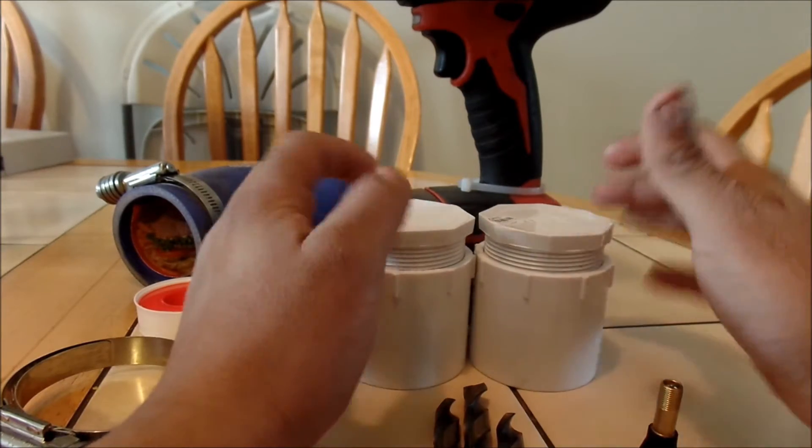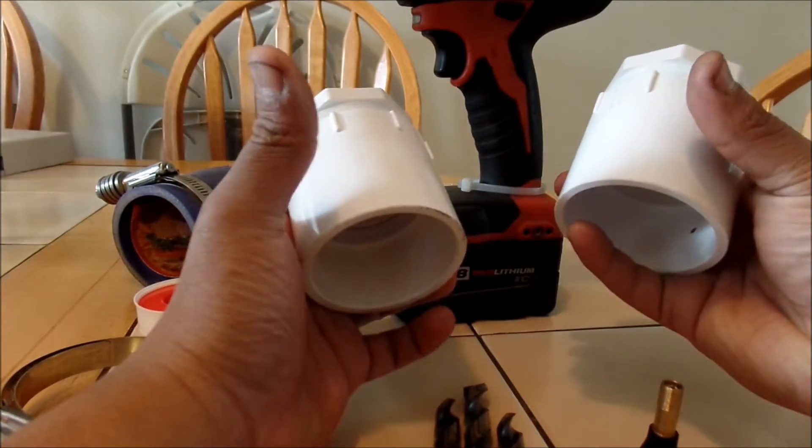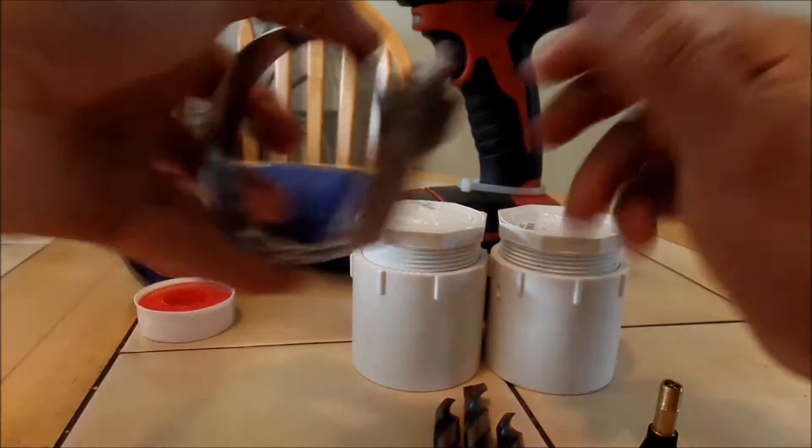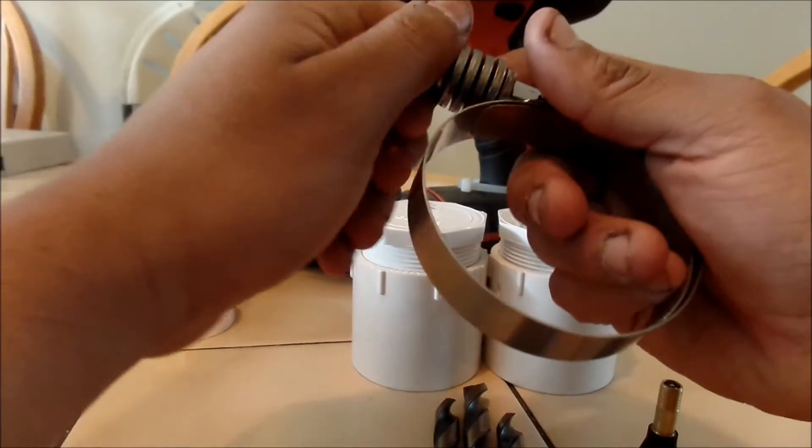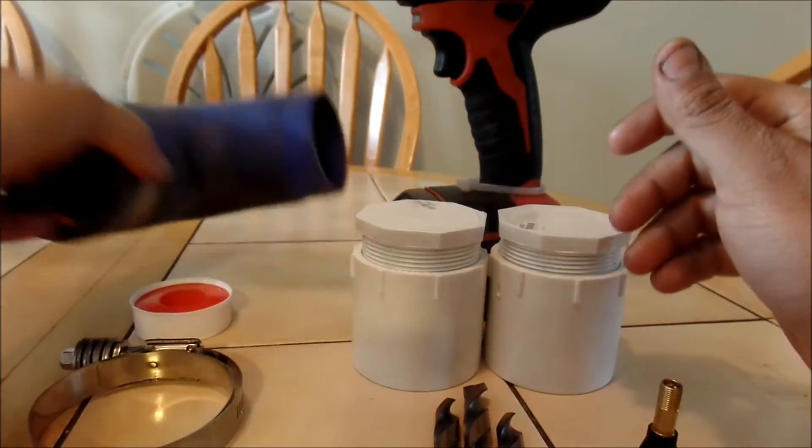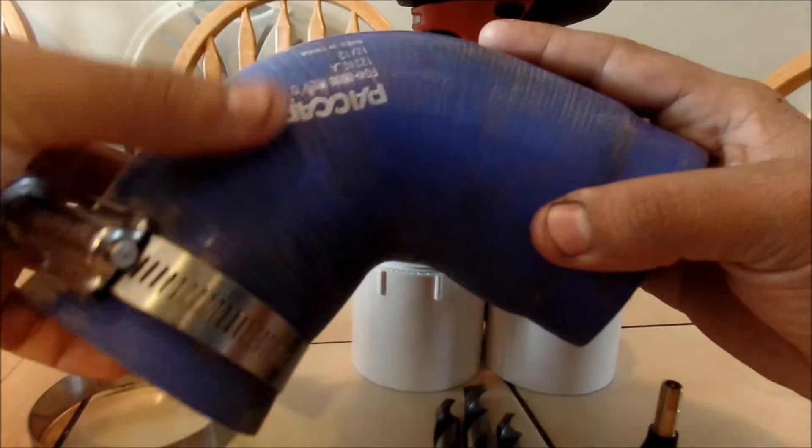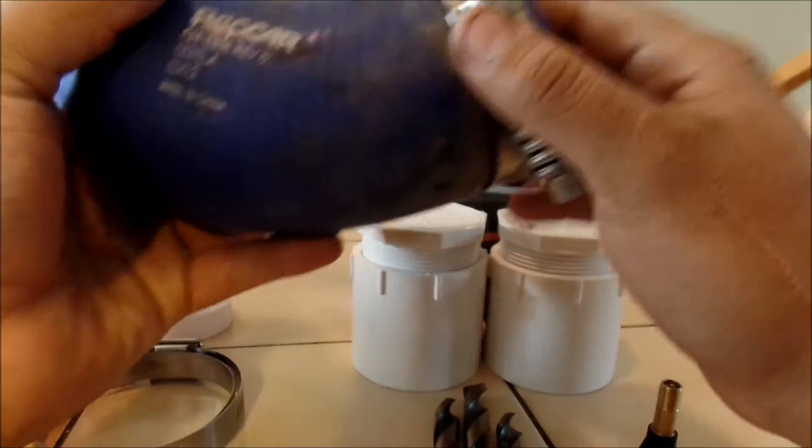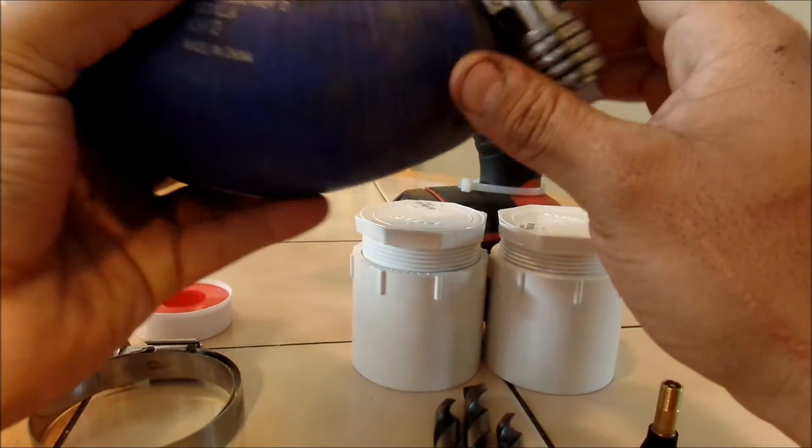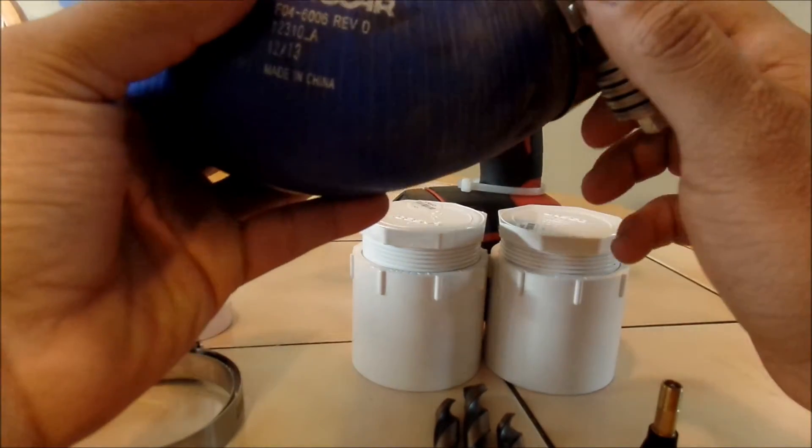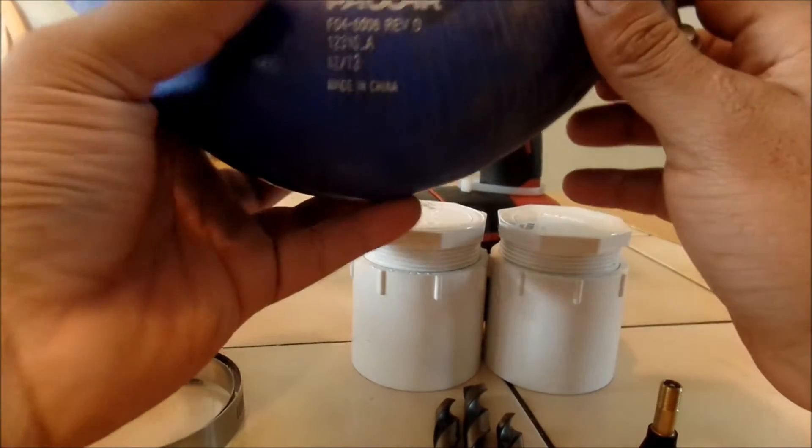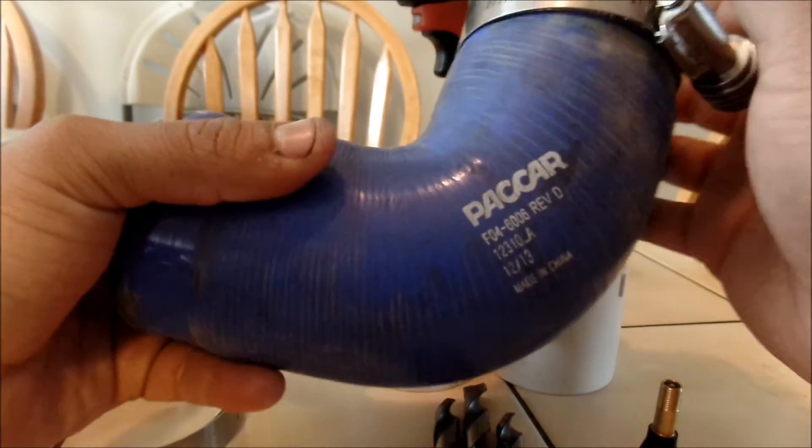I bought these at Lowe's. I paid about a dollar fifty for each cap, threaded cap, and a dollar something for the end. You'll need some hose clamps, a coupler. I'm using this one from work. This came out of a radiator, so you can probably get one of these from your local auto parts store pretty cheap.